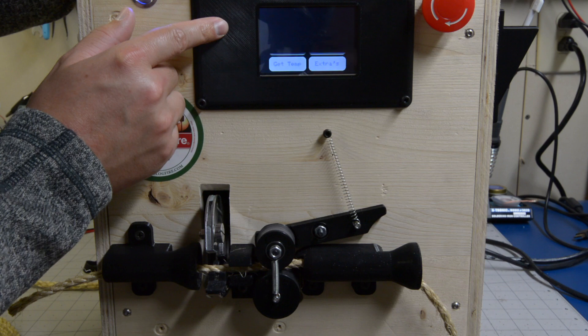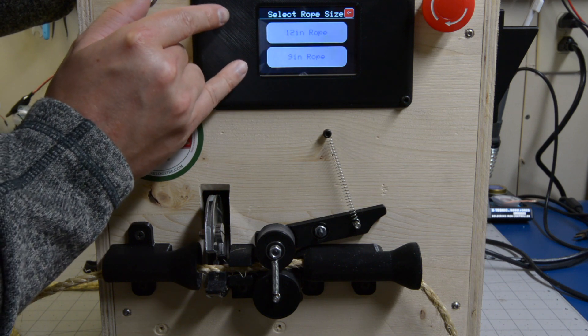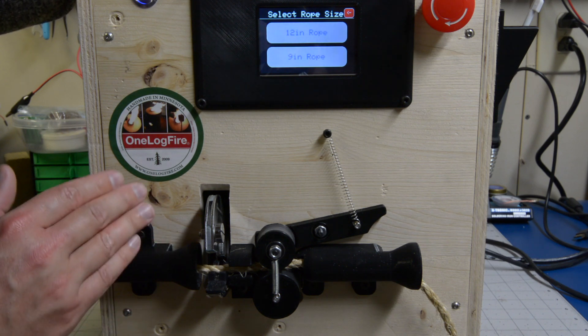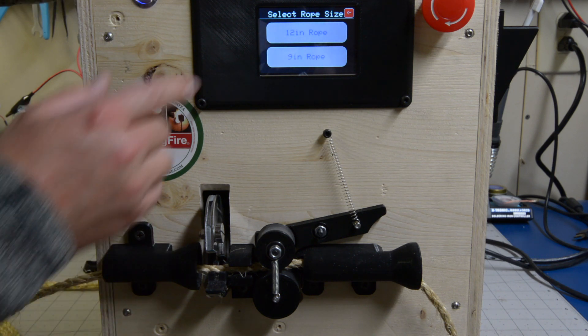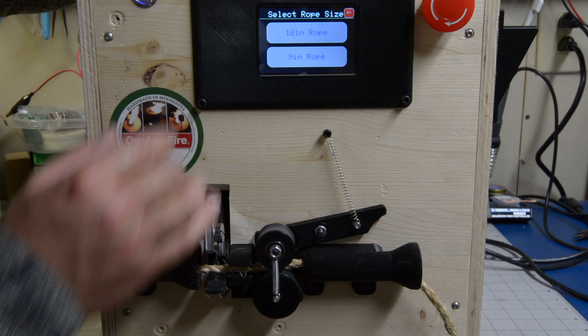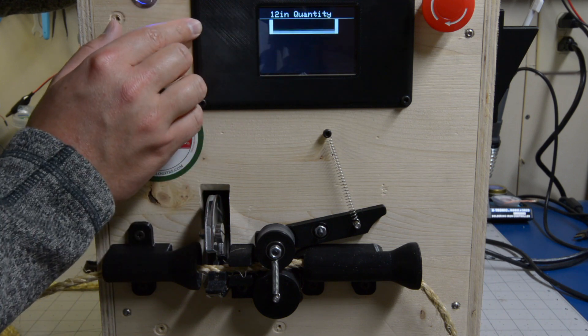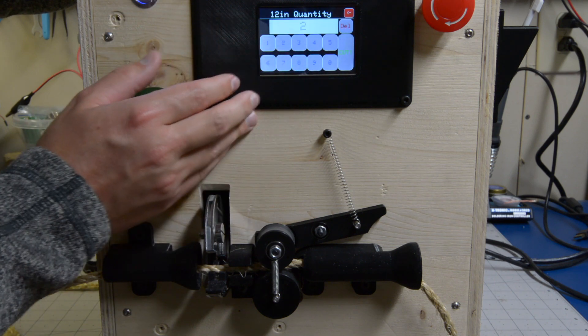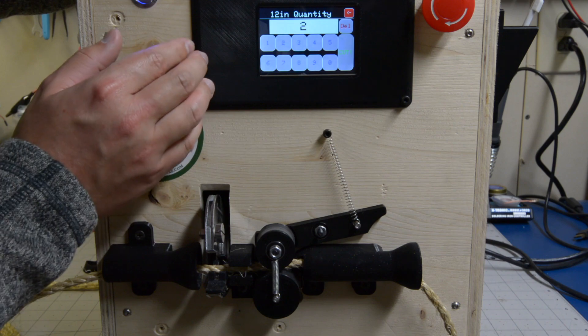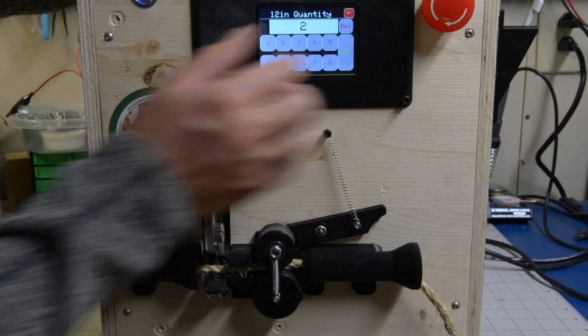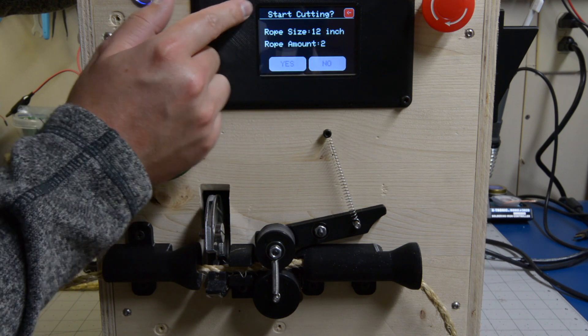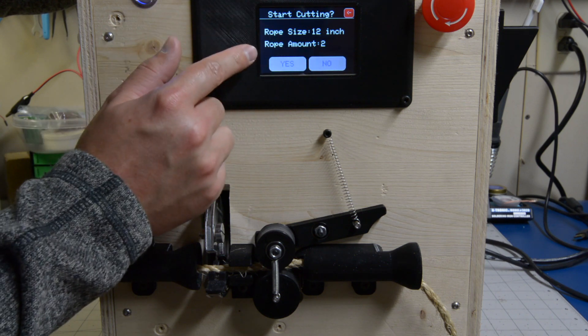So from here the One Log Fire Company has a predetermined 9 inch and 12 inch length of rope that they are using in their products. So for this demonstration we'll just use 12 inches. They both do the exact same thing - this just determines the length of rope you would like to cut. Select your length and say you would like to cut two, enter your quantity. There's also a delete button so say you put 20 but only wanted to put two you can delete and continue to cut.